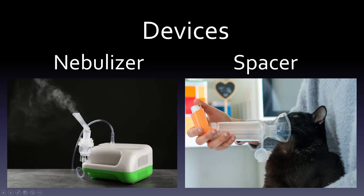Regarding delivery devices: nebulizers convert liquid medication into a mist that patients inhale — the nebule is placed in a cup and the patient either puts their mouth on it or breathes in the mist. Spacers are used for those who can't coordinate an inhaler properly. Even devices for animals (like cats) use a chamber spacer that allows the animal to breathe in the medication, with a small flap indicating each breath. So nebulizers versus spacers are the key device distinction.